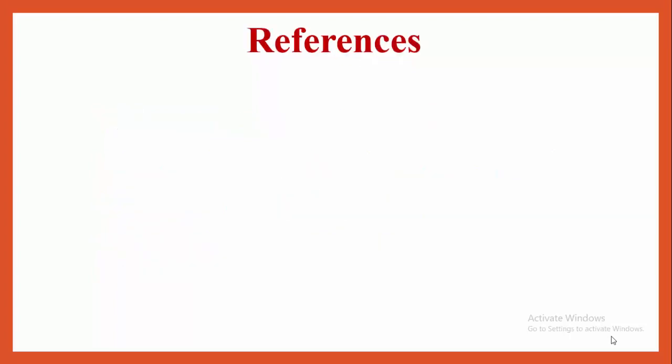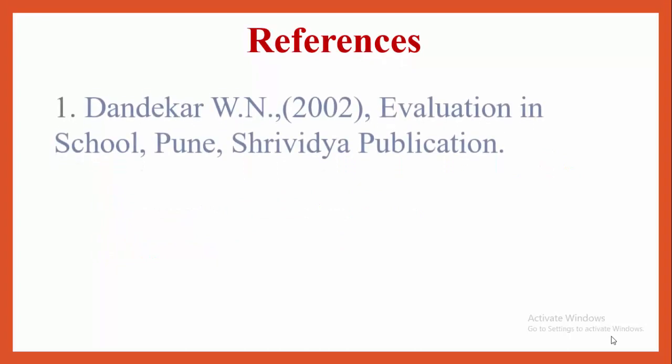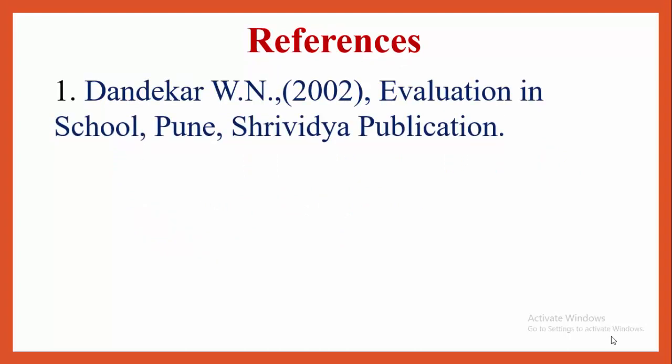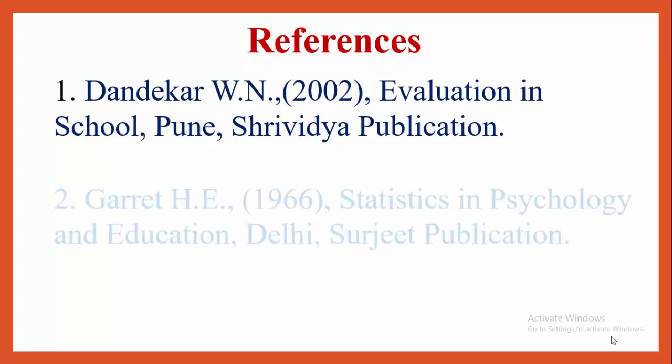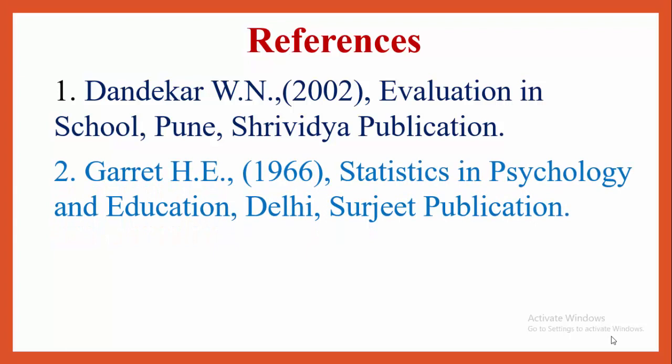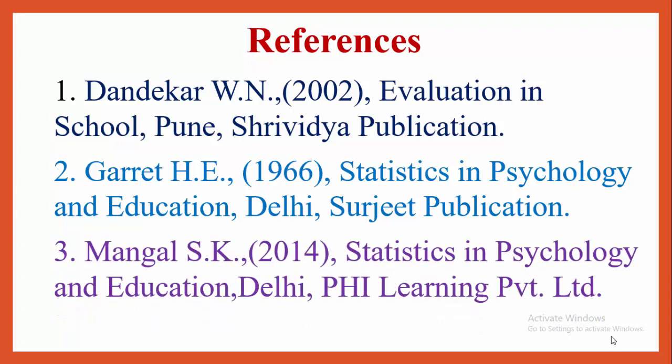References for measures of central tendency: Dandagar W.N., Evaluation in School, Pune: Srividya Publication; Garrett H.E., Statistics in Psychology and Education, Delhi: Surajit Publication; Mangal S.K., Statistics in Psychology and Education, Delhi: PHI Learning Private Limited. These three books are very useful for more information regarding measures of central tendency.